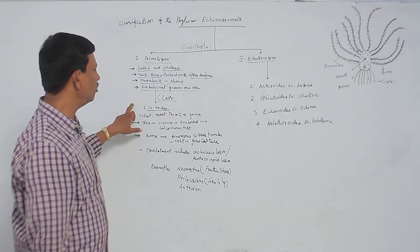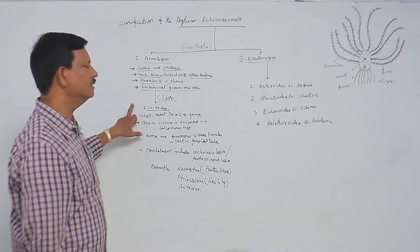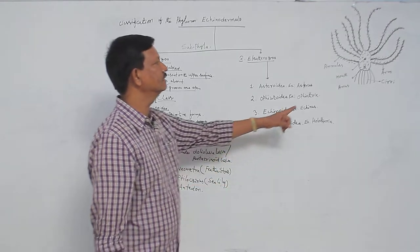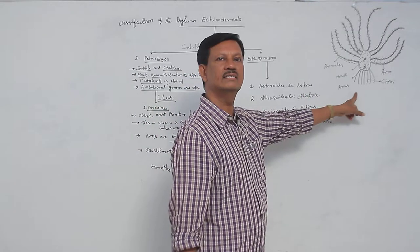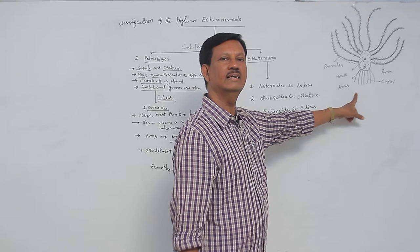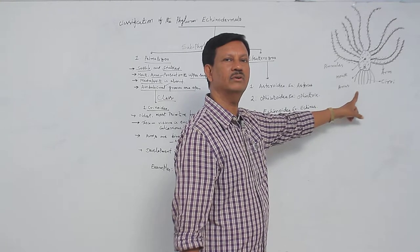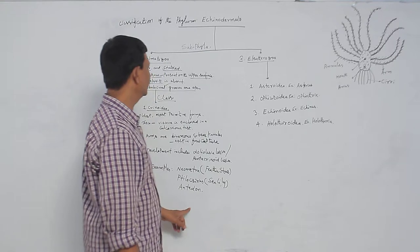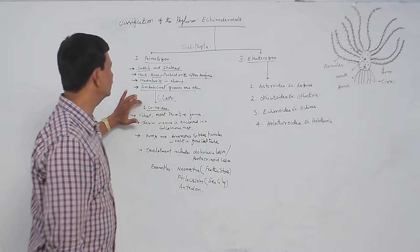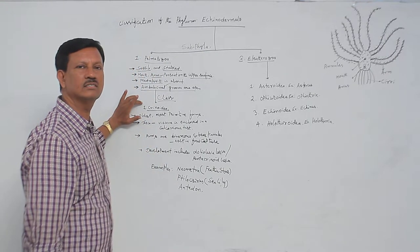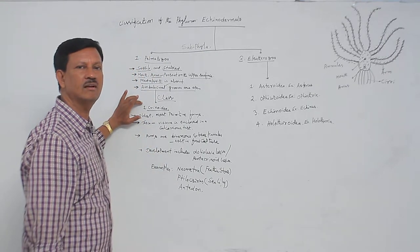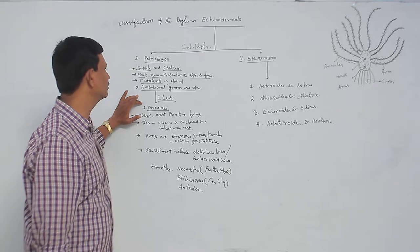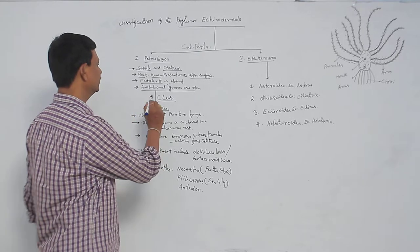Crinoidea animals are commonly known as sea lilies. As you can see in the diagram, they look like a lily and are found in marine water. Sometimes they are also known as feather stars. These are the common names of Crinoidea.